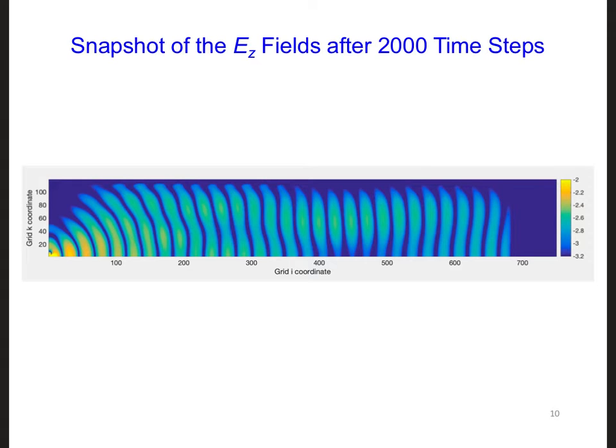Here's a snapshot of the EZ fields that I got after 2000 time steps. We'll look at the EZmax fields in a moment. This looks about as we expect from our earlier simulations. Because the c-axis is limited, we primarily see the fields in the Earth ionosphere waveguide outside of the PML.